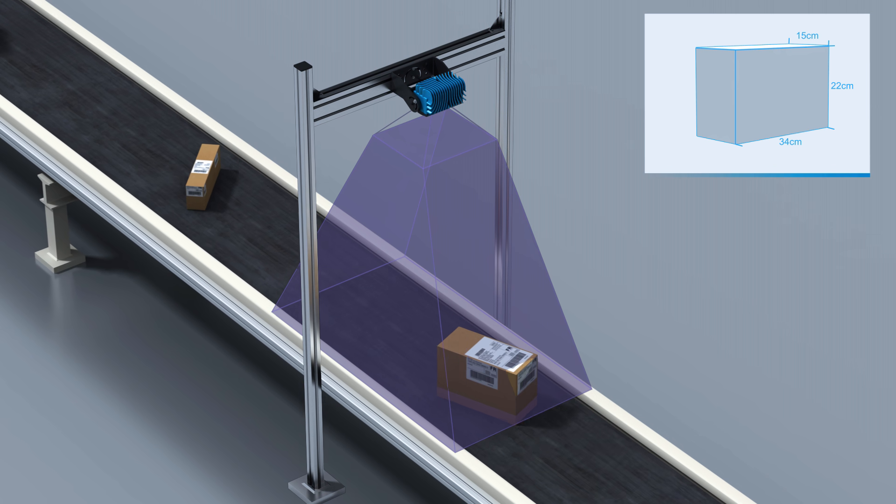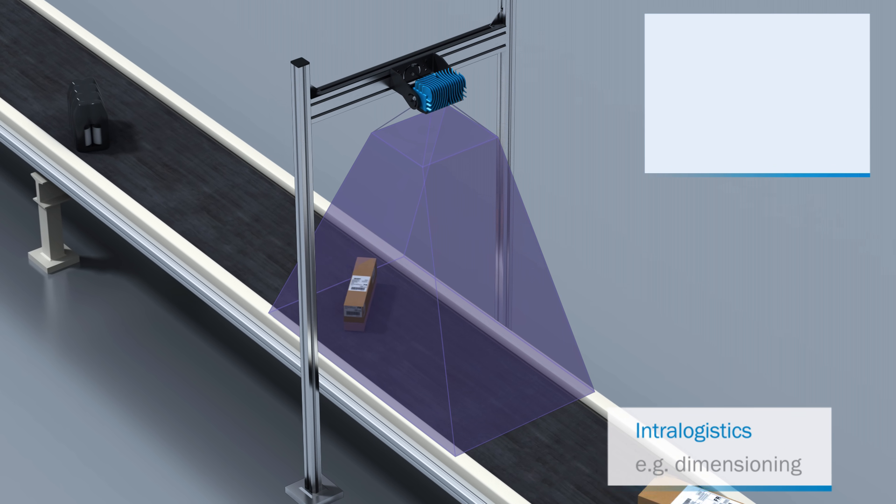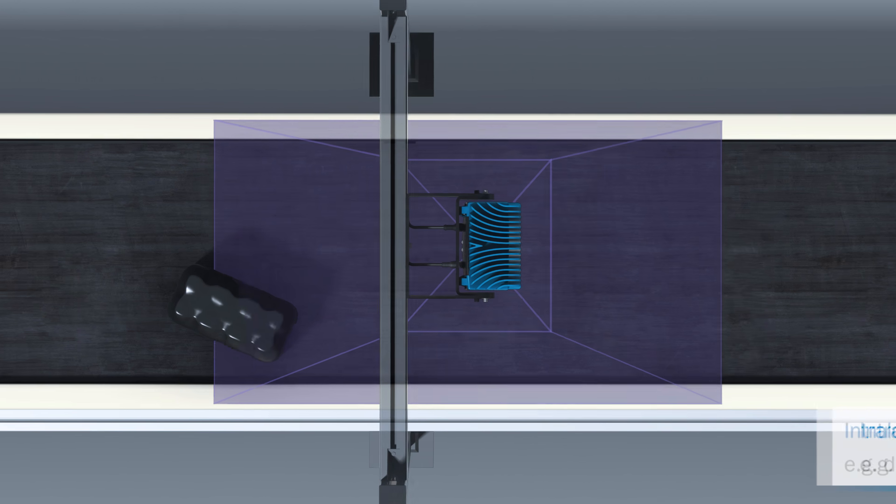Due to its high frame rate, Visionary T also enables dynamic dimensioning, for example, of goods on a conveyor belt, including their exact position and orientation.